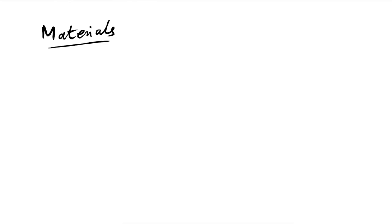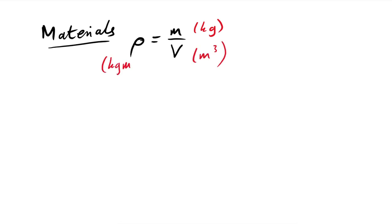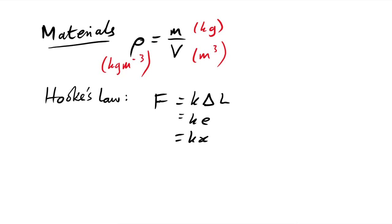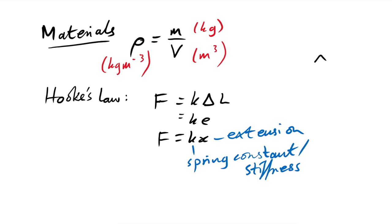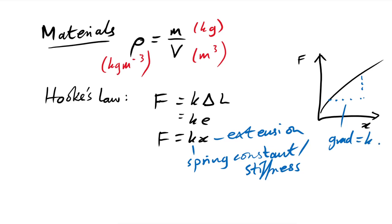For materials, density ρ = m/V in kg/m³. Hooke's law for springs is F = kx (or kΔl), where F is force, x is extension, and k is the spring constant or stiffness. On a force-extension graph, the gradient gives the spring constant, since k = F/x.